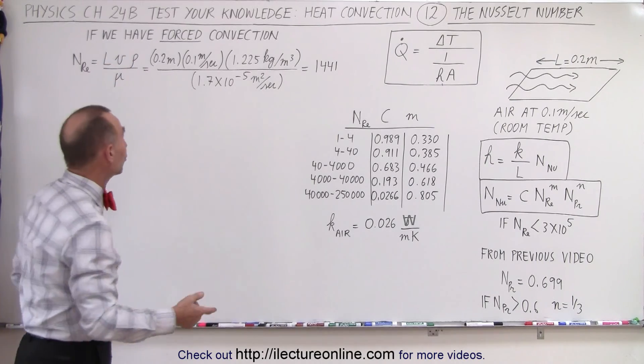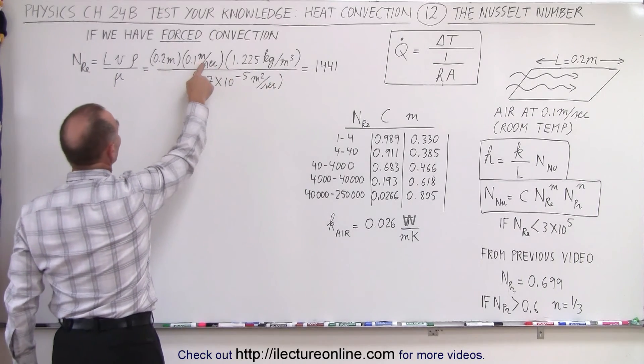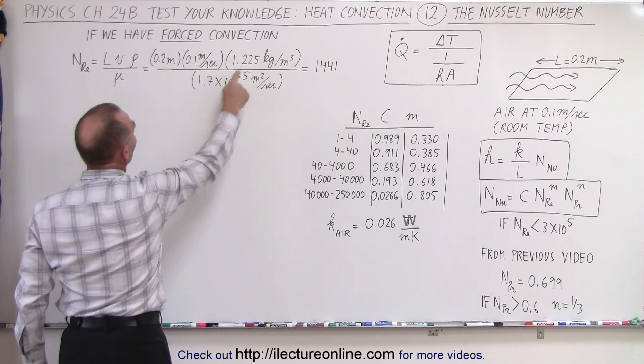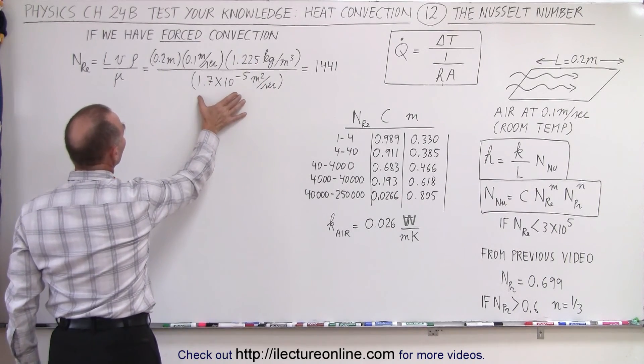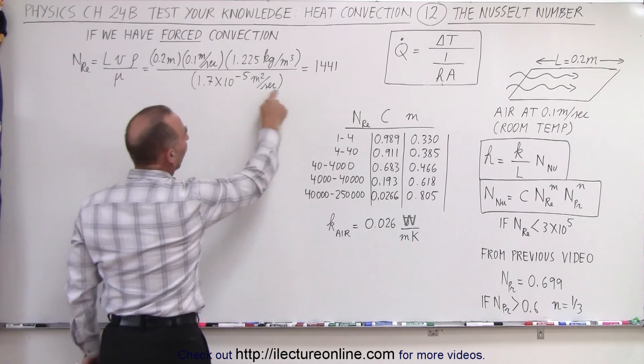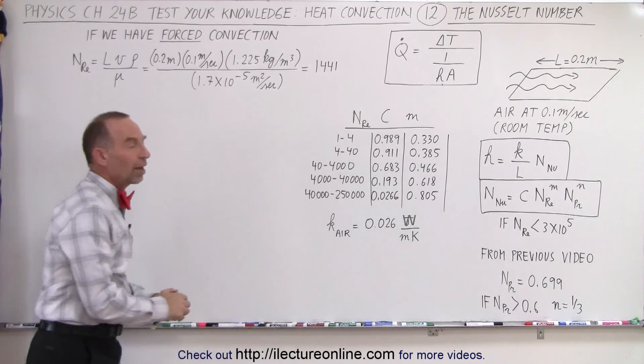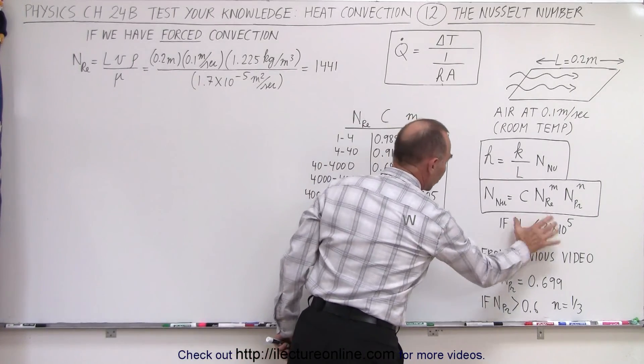So for air at room temperature we have the characteristic length of 0.2 meters, the velocity of 0.1 meters per second, the density of air 1.225 kilograms per cubic meter, and the viscosity that would then come from a table is equal to this. And then we have a Reynolds number of 1,441. It is less than 300,000 so we're good to go.